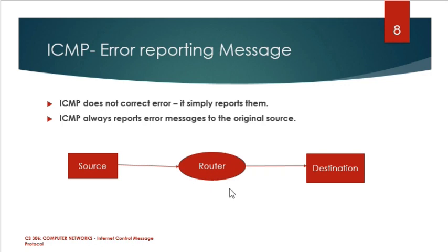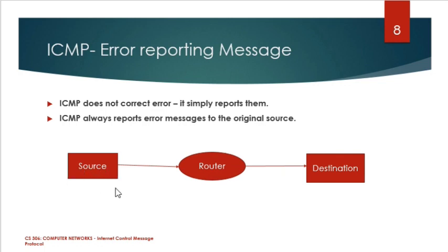There is a source, and in between there are routers, and at the end there is a destination host. If you are pinging a packet from source to destination, this packet moves through the router. The router forwards the packet; it may find some error between this router and the destination, and there should be some message sent back. The source should receive an acknowledgement that the message is lost or could not reach the destination.